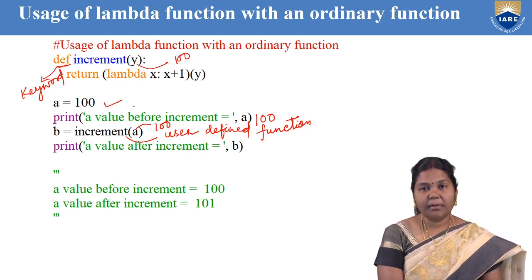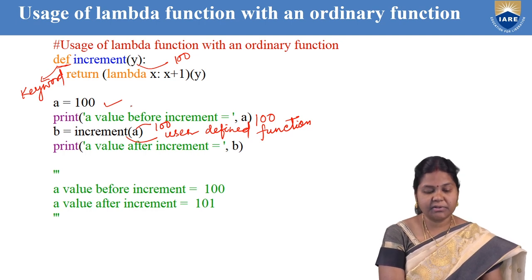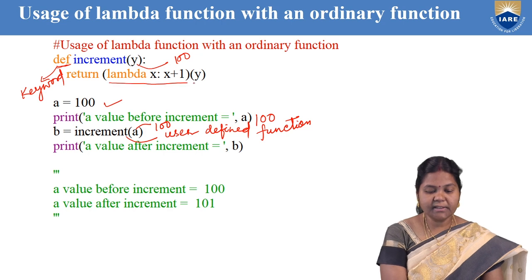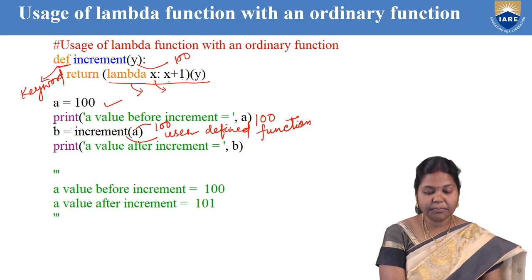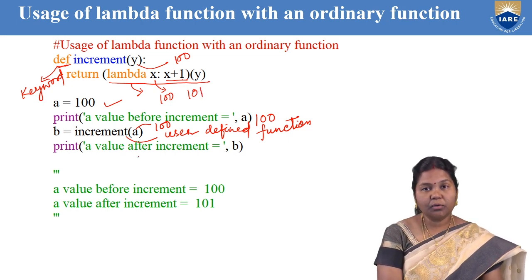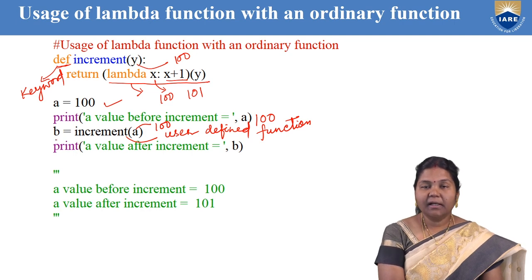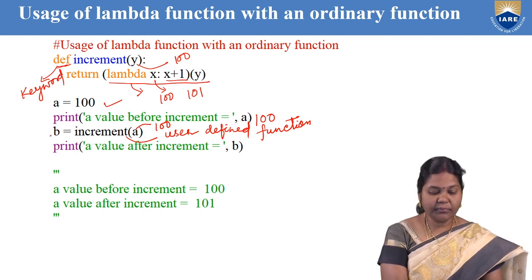In the return statement, we have written one lambda function. The purpose of this lambda function is to increment the value of y. So in the return statement, lambda is used with argument x, and it is doing x plus 1. If x is 100 then it computes x plus 1, which is 101. The lambda function can be written along with user-defined functions and it will return that expression. The increment function's return value is assigned to a variable b.